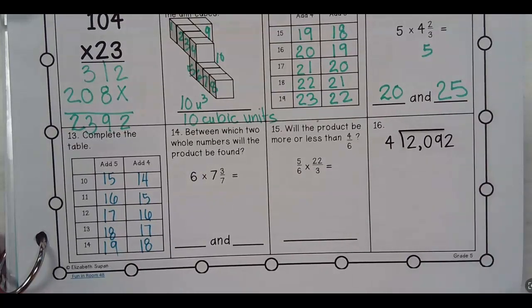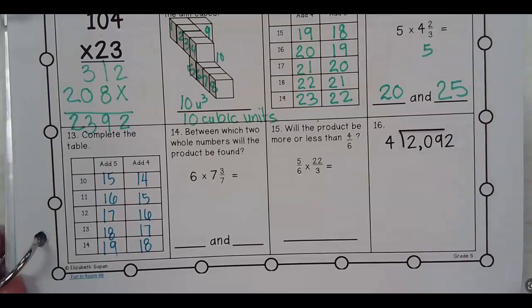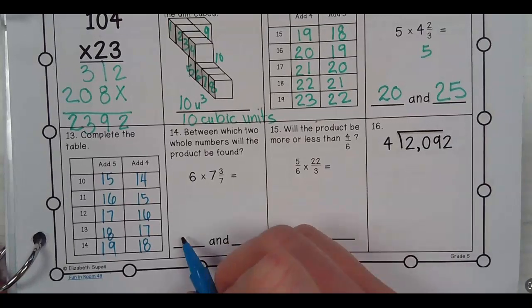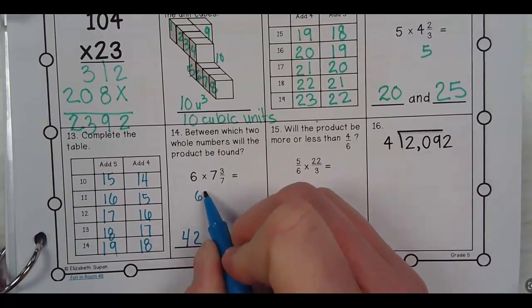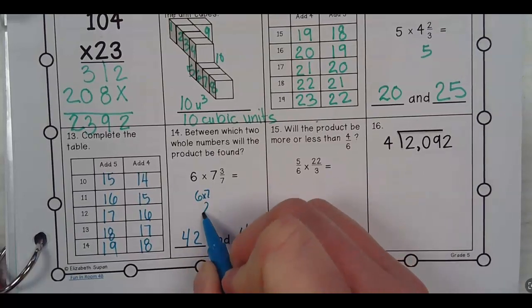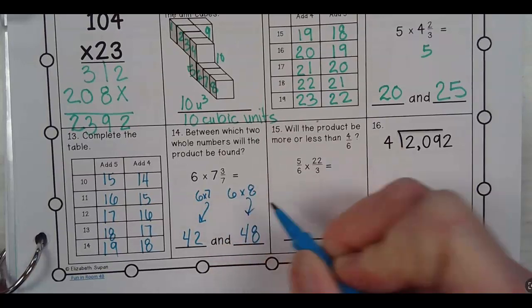Between which two whole numbers will the product be found? With confidence. 42 and 48. Remember, 6 times 7 is 42. 6 times 8 is 48.